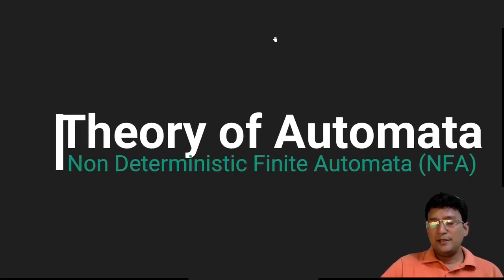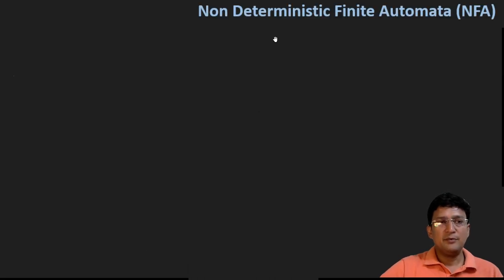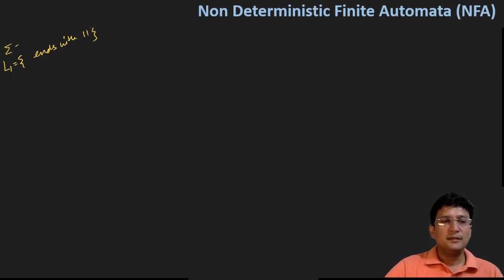We'll once again see some examples related to NFA in this lecture. Let's say I have to draw the NFA for a set of strings that ends with 'one one.' Here we are assuming that the input alphabet set is zero and one.